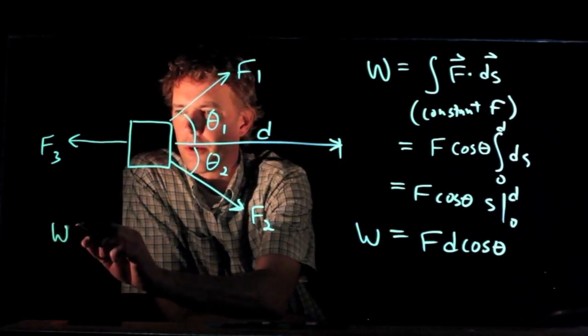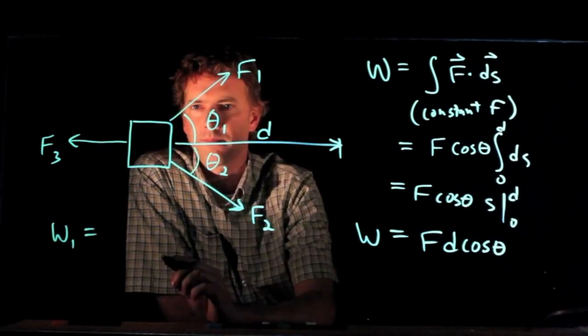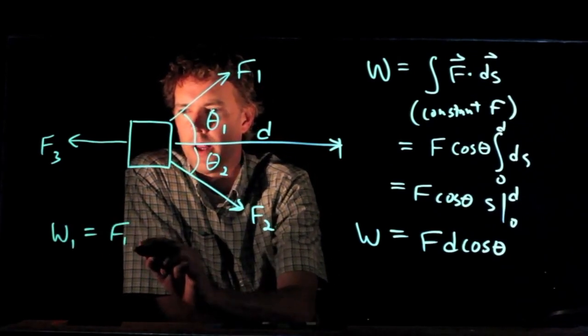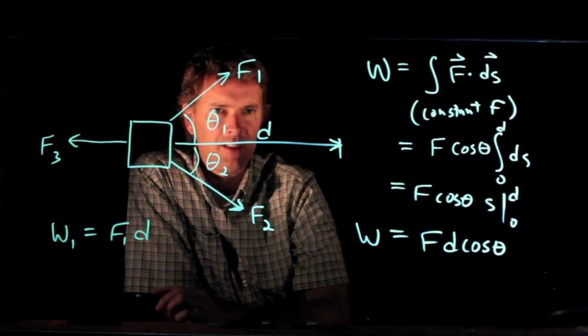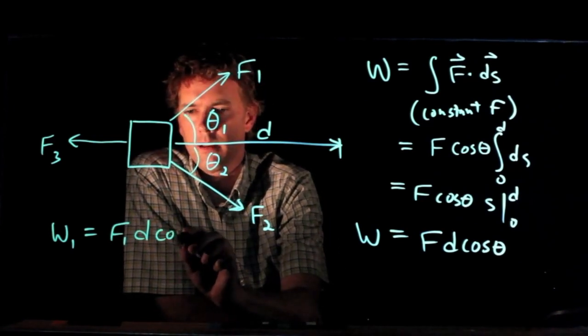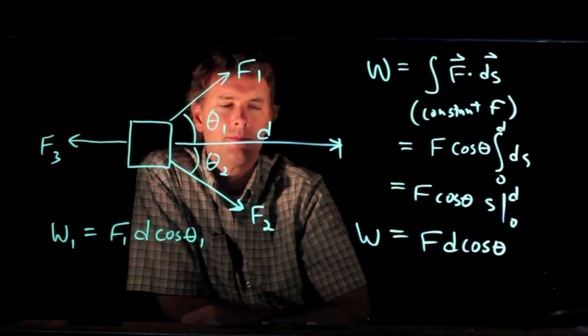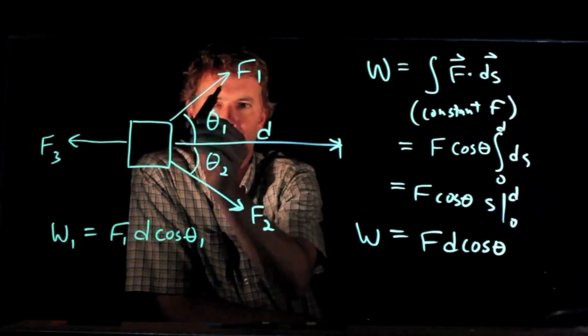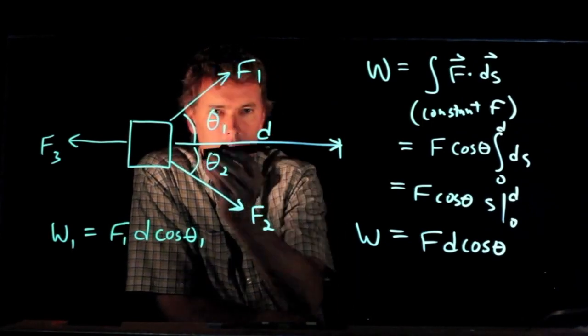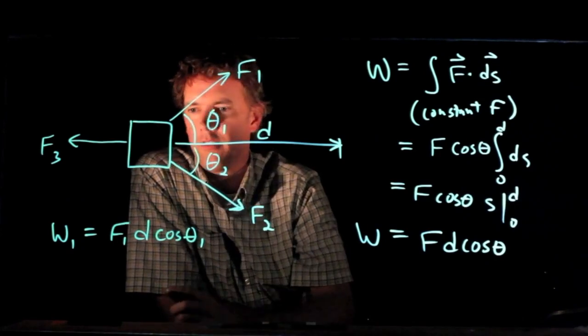All right, so what's the work due to force one? It is F1, it moves a distance d, and we are given that angle. That angle is between the force and the distance, the displacement vector, and that angle in this case is theta one.